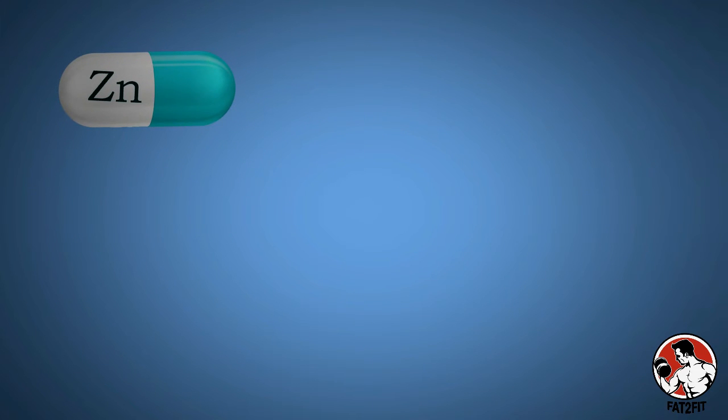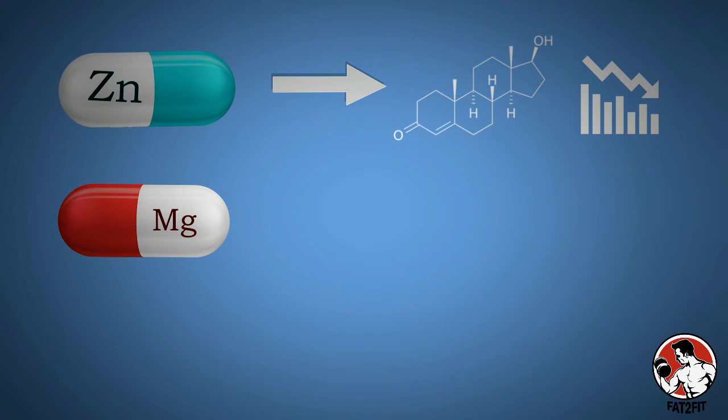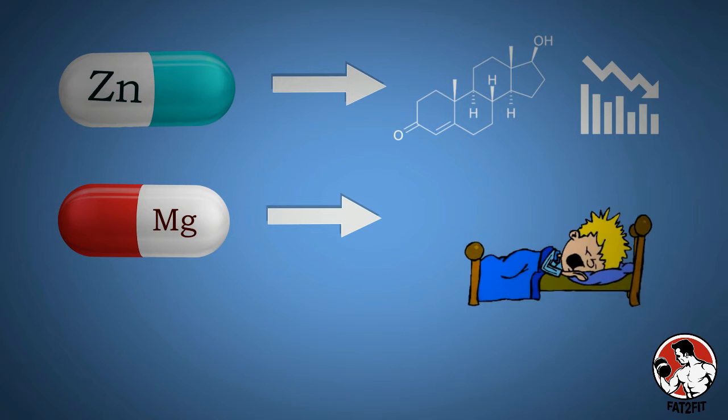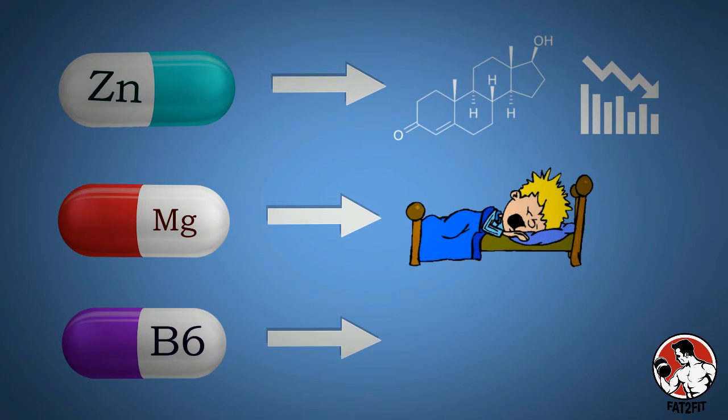If you are deficient in zinc, you would experience a decrease in serum testosterone levels. Magnesium is the second most efficient micronutrient beside Vitamin D, which helps improve the quality of your sleep. Vitamin B6 is a multi-purpose coenzyme that assists in energy production.